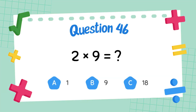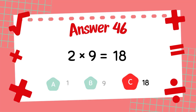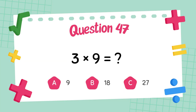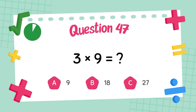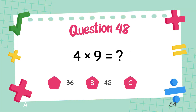What is 2 times 9? The answer is 18. What is 3 times 9? The answer is 27. What is 4 times 9? The answer is 36.